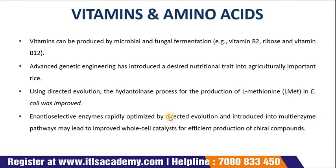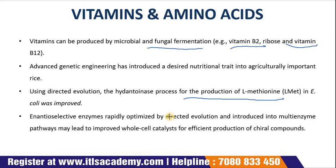Vitamins and amino acids are also an important part of the pharmaceutical industry. Vitamins can be produced by microbial and fungal fermentation — for example, vitamin B2, riboflavin, and vitamin B12. Advanced genetic engineering has introduced desired nutritional traits into ethnically and culturally important rice. Using directed evolution, the hydroaminotransferase process for production of L-methionine in E. coli was improved by inverting the enantioselectivity and increasing the total activity of a key enzyme in a whole-cell catalyst.